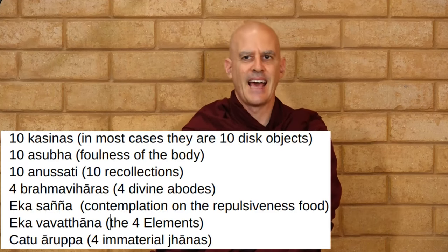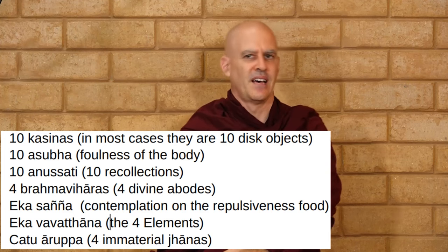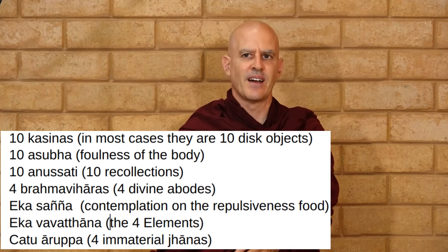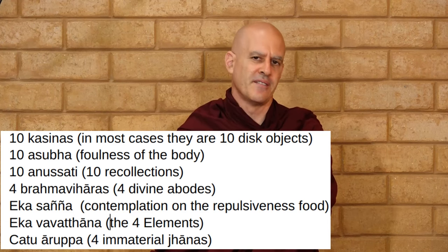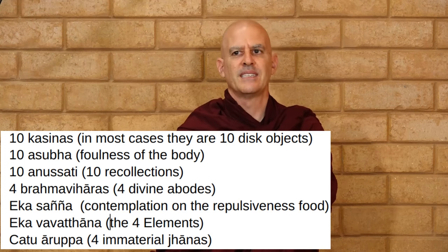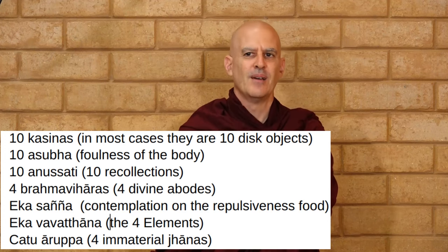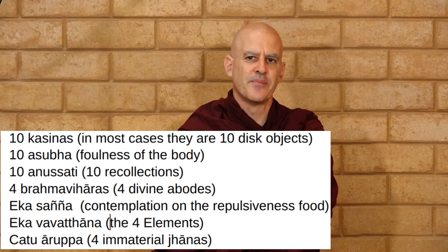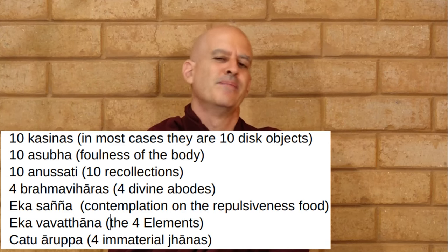Here is a list that we will talk about in further detail. We have the ten kasinas — in most cases these are the ten disk objects. We have the ten asubha, which is the foulness of the body. We have the ten anusatis, which are the ten recollections. We have the four brahma-viharas, which are the four divine abodes. We have the eka-sanya, which is one perception — the contemplation on the repulsiveness of food. We have the eka-vavatthana, or the four elements meditation. And lastly we have the chatu-arupa-jhanas, which are the four immaterial jhanas.